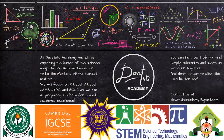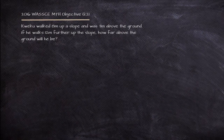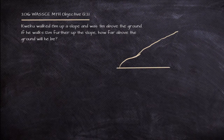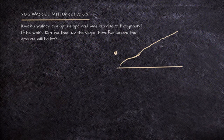Welcome to Dave Tooth Academy. Today we want to look at some questions on triangles from 2016. We are told that Kweku walked 8 meters up a slope and was 3 meters above the ground. If he walks 12 meters further up the slope, how far above the ground will he be?